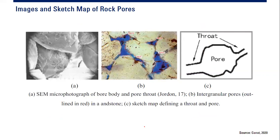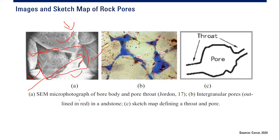Here are images and sketch maps of pore types. Picture A is a micro-photograph showing pore bodies and pore throats — you can identify the narrow pore throat and the larger pore body. Through the pore throat, fluid can flow. We can measure the size of the pore throat from such images.